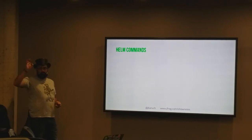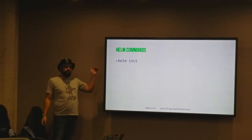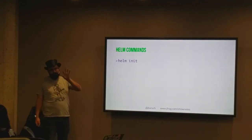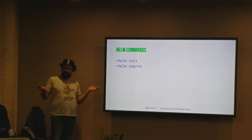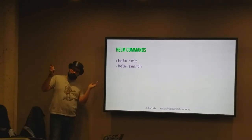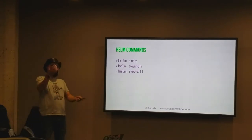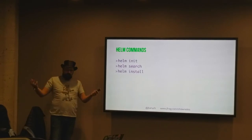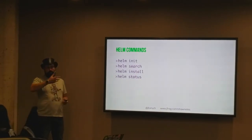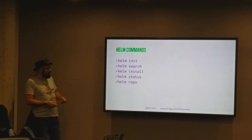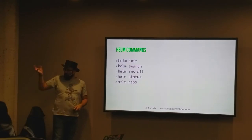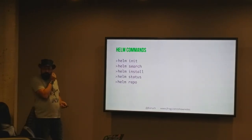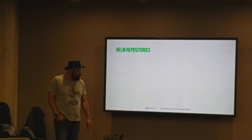Key Helm commands: `helm init` initializes Tiller inside your Kubernetes cluster and takes control. `helm search` finds packages - for example, searching for Artifactory. `helm install` downloads packages from the repository, passes them to Tiller, which pre-populates templates and runs everything in Kubernetes. `helm status` shows the status of your charts. `helm repo` is a set of commands for managing repositories - adding, removing, creating the repository index.